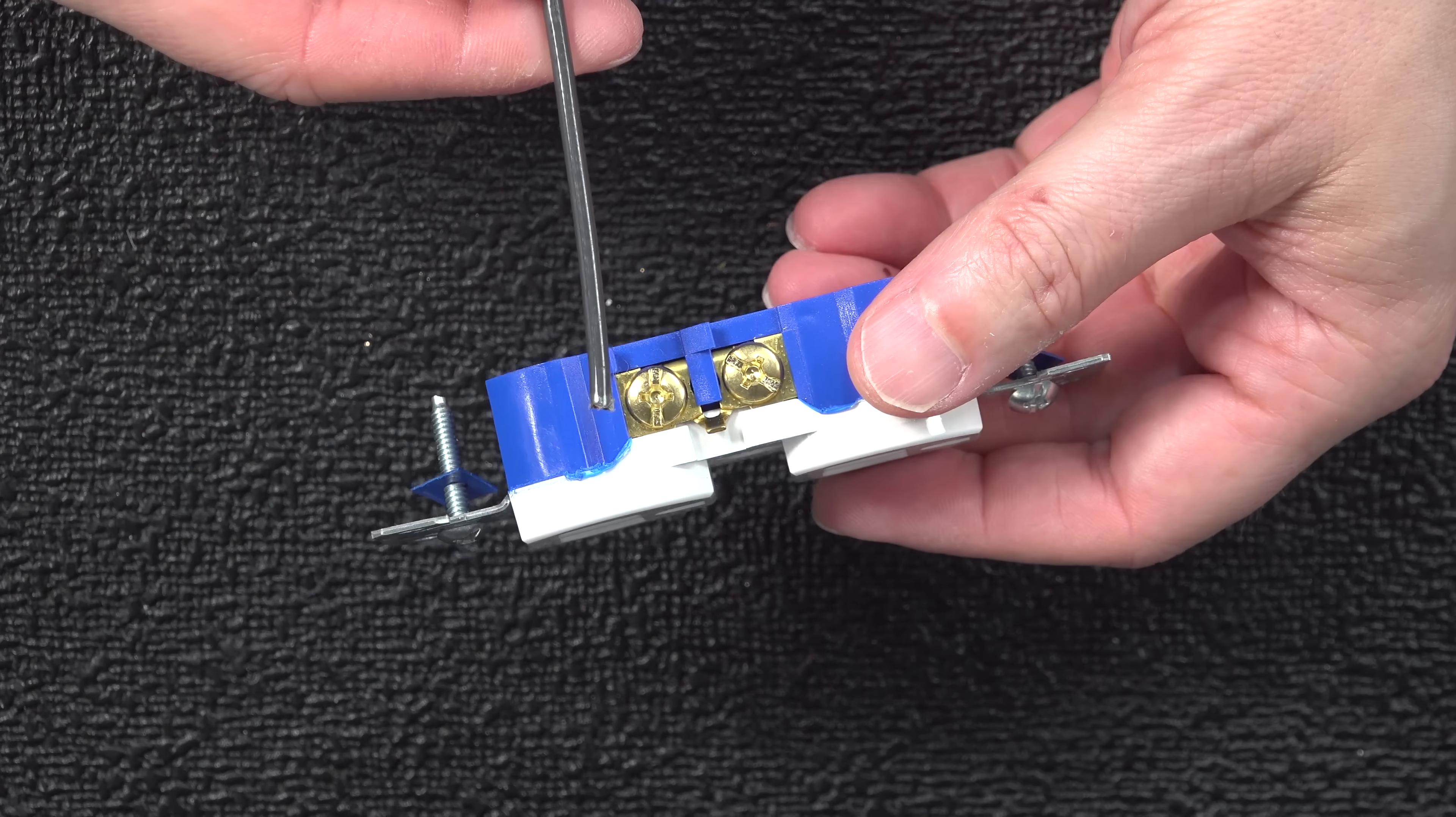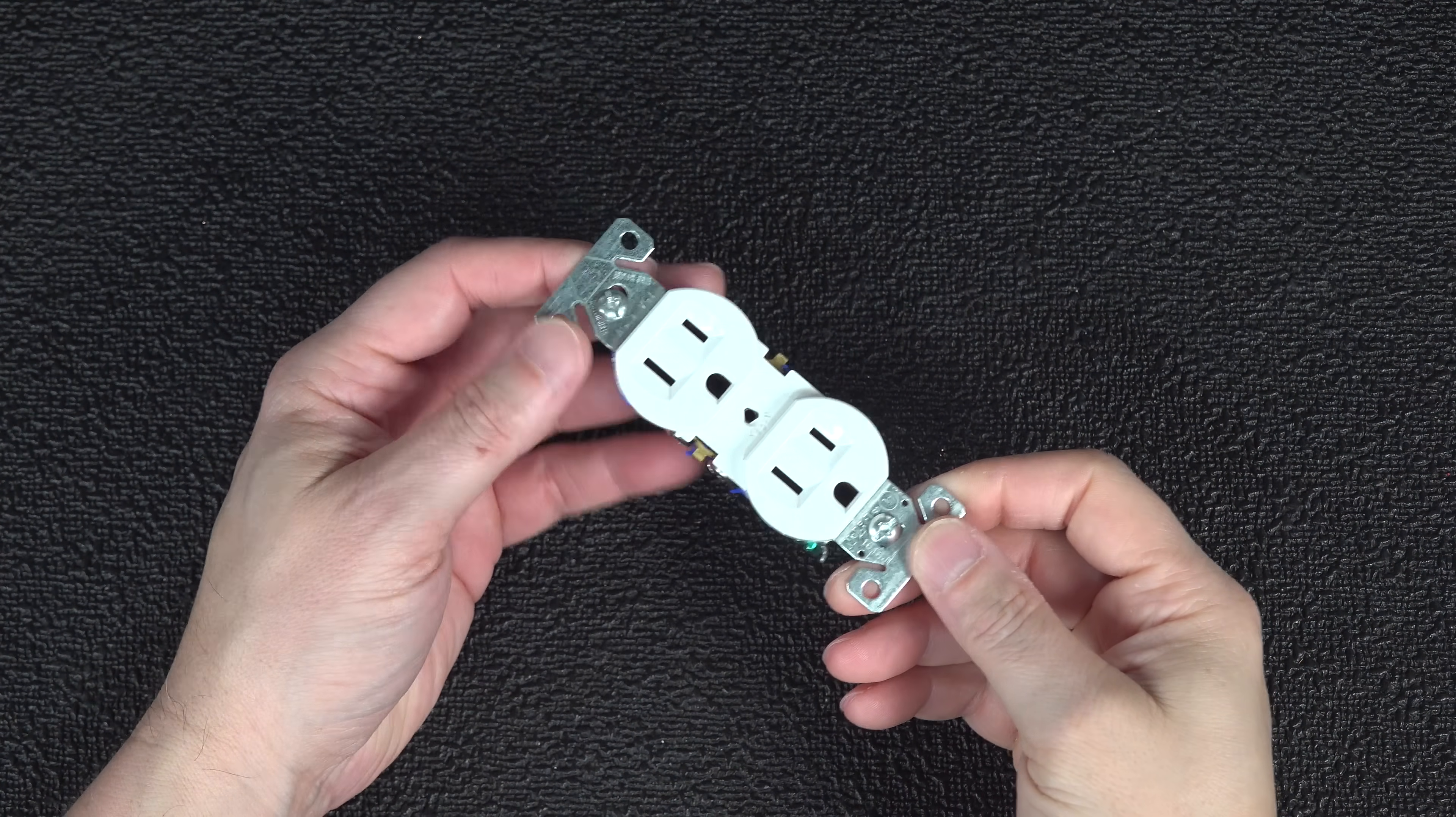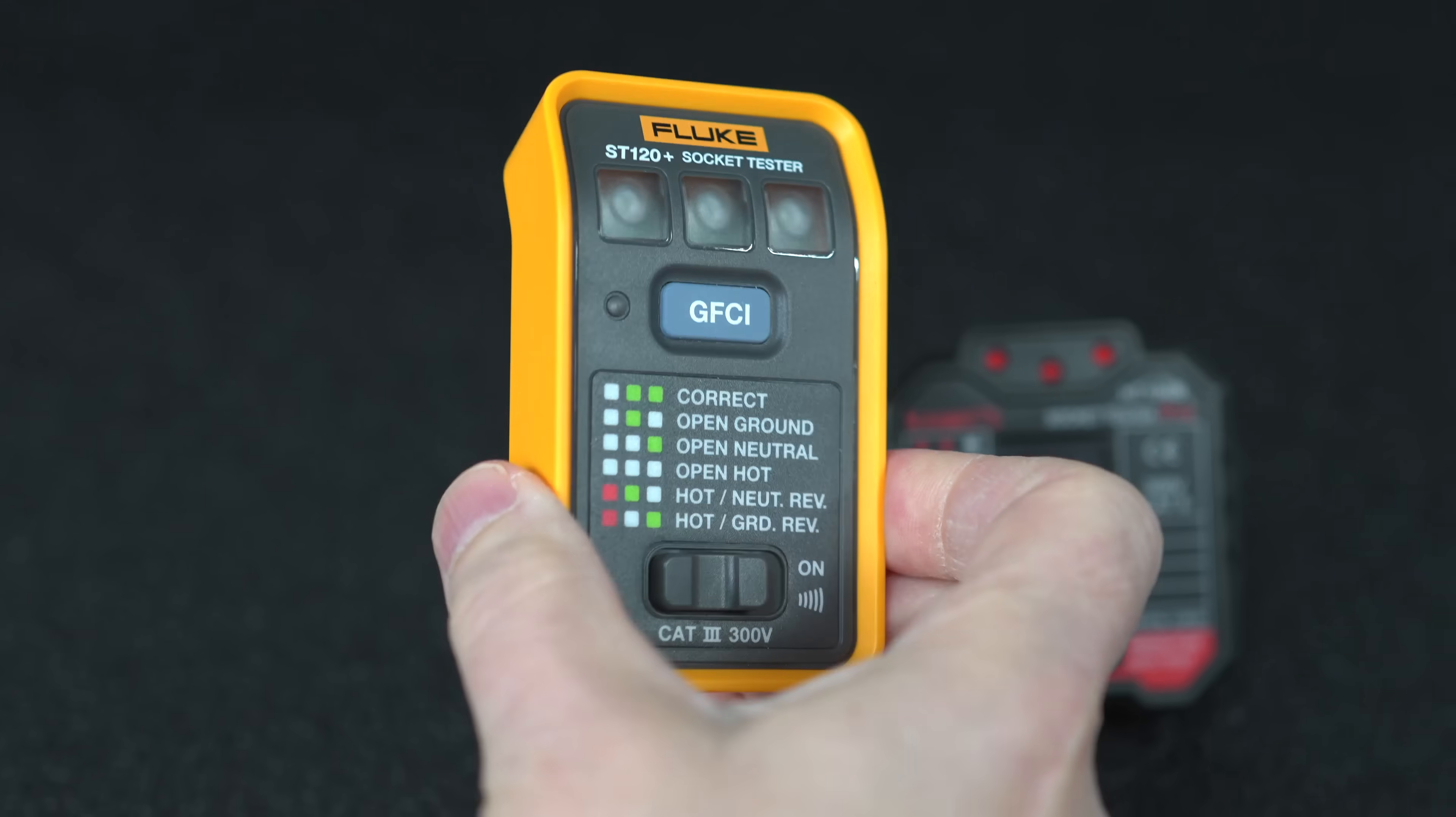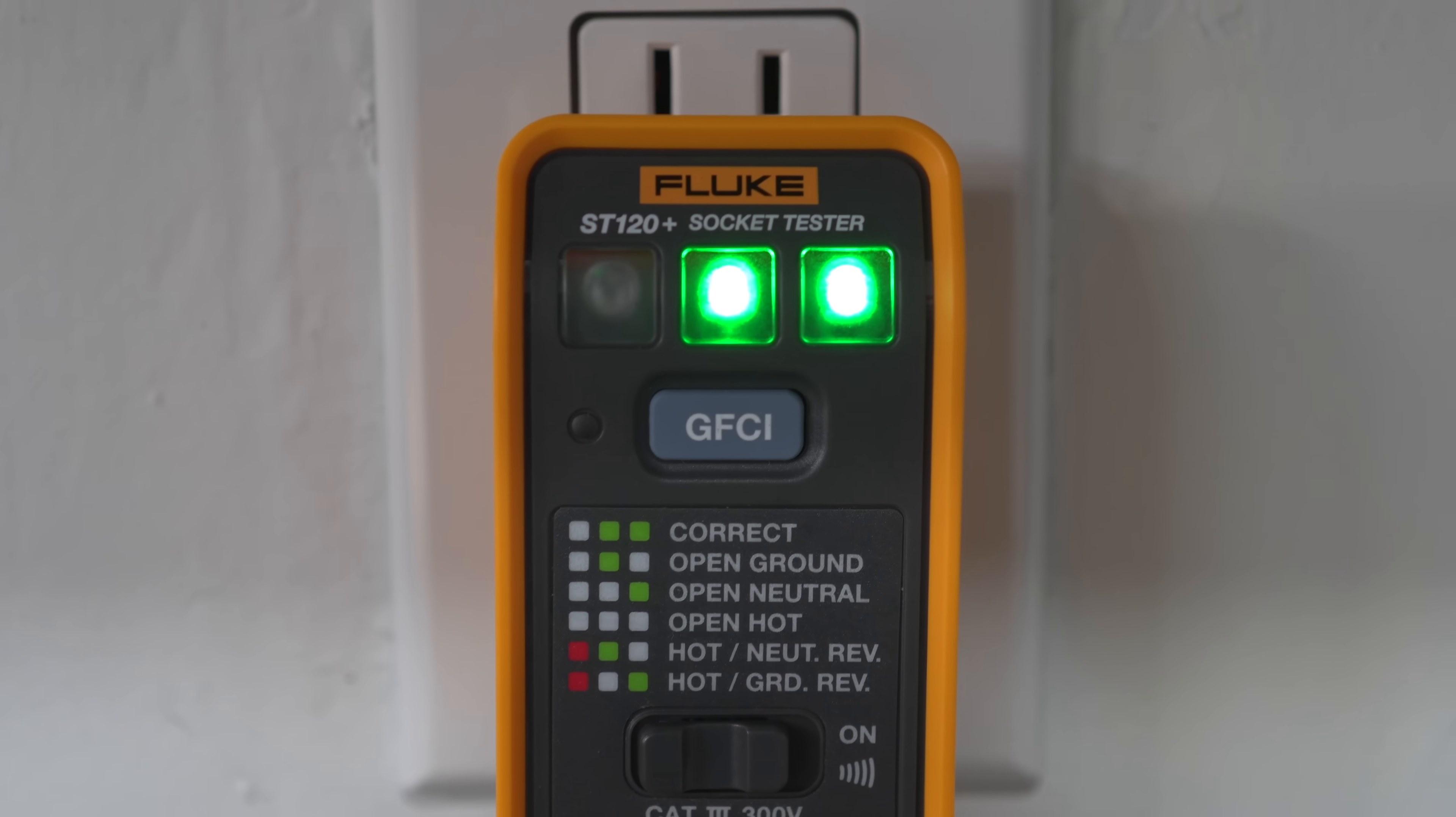But many people wire up outlets incorrectly and the outlet still seems to work fine, but they've created a reverse polarity condition. I talk more about that in the video I've linked in the upper right hand corner, but I recommend when you're done doing any outlet wiring, you use a plug-in tester like this. This will confirm that the polarity is correct and your ground wire has also been connected properly.